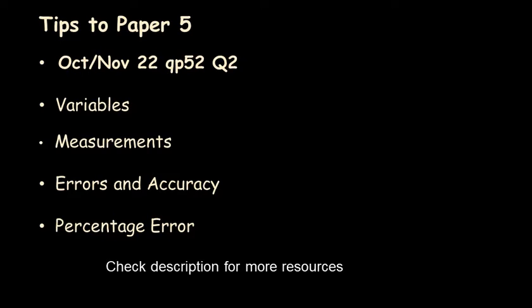Along with that, we will also see tips to solve other paper 5s in general. We will see what variables are in experiments when we decide and plan an experiment, what measurements we need to take, what are the errors and accuracies, and what is the percentage error — all these points we will cover along with solving question 2.